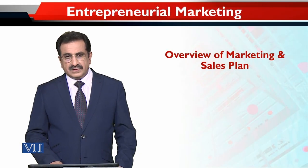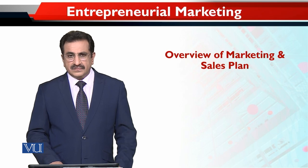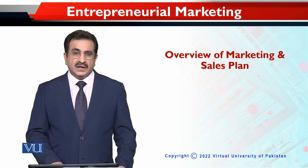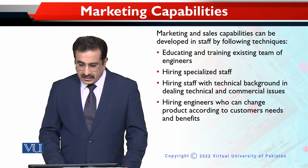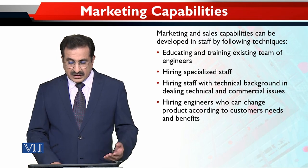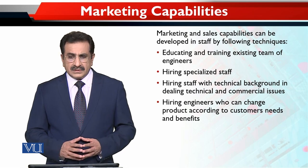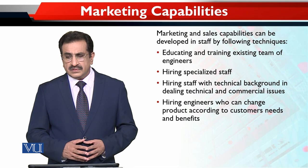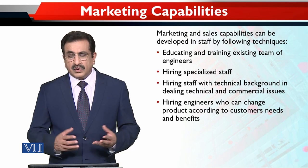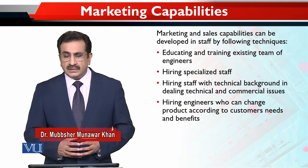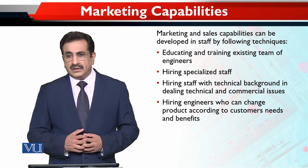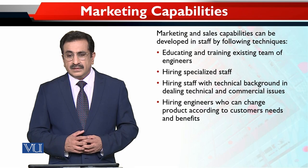After discussing technical vis-a-vis marketing and sales capabilities, we could have an overview of the marketing and sales plan of the entrepreneur. Marketing and sales capabilities can be developed in staff by following techniques — educating and training the existing team of engineers. Usually the entrepreneur or the team are engineers because they have brought some new technology, some innovative process, some new product, which they are very sure is altogether a new concept and will be very successful in the market. At that time, they are probably not in a position to appreciate the marketing capabilities.